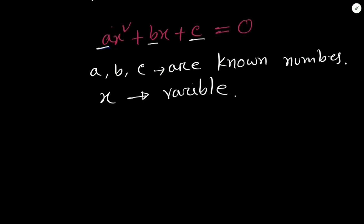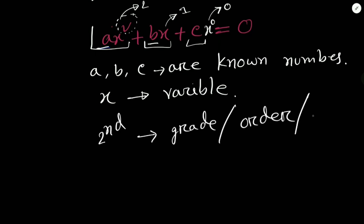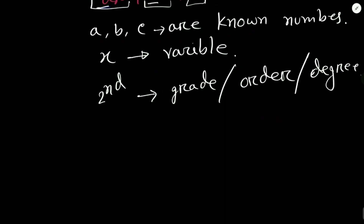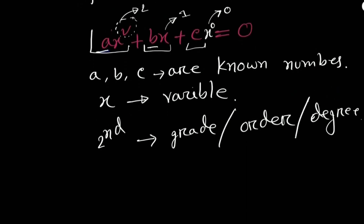What is the degree of this equation? We can see the maximum power of variable x is 2. The equation has three terms: the first term has maximum power 2, the second term has power 1, and the third term (the constant c) has power 0. So the maximum power is 2, meaning this is a second-grade, second-order, or second-degree equation.